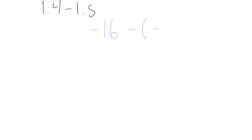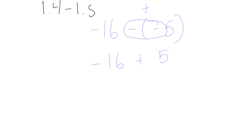One thing to remember: when you see something like negative 16 minus negative 5 — whenever you have a negative right next to a subtraction sign, you treat it as addition. So this problem becomes negative 16 plus 5. Different signs: absolute values are 16 and 5. Subtract to get 11. Keep the sign from the greater number — the answer is negative 11.